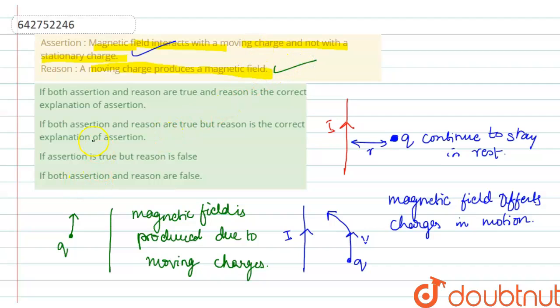And hence, if both assertion and reason are true and reason is the correct explanation of assertion is the correct answer.